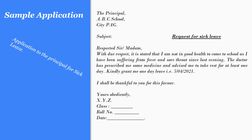Skip one more line here. 'I shall be thankful to you for this favour.' Skip another line and then write 'Yours obediently,' comma, XYZ or your name, and then class, then roll number, then date.